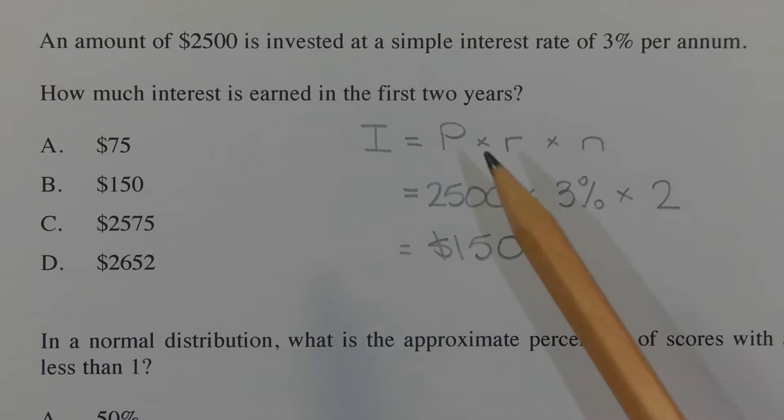Now in this case, the principal is $2,500, R is 3% per annum or per year, and N represents the number of years that this investment runs for, which in this case is two years. So N will equal 2.